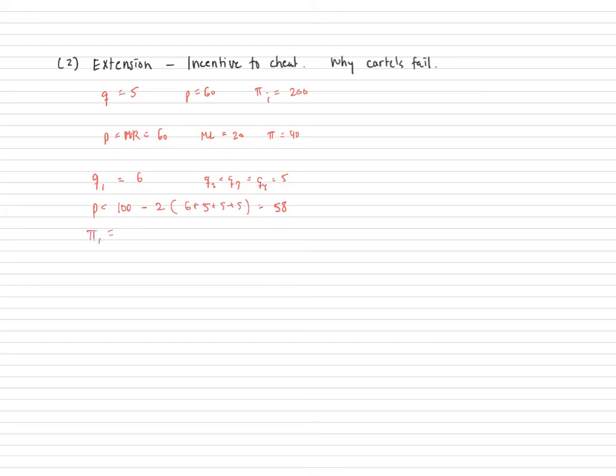And the firm one will then be making 58 minus 20 times six, because they're producing six units now, which is actually equal to 228. All right, so clearly 228 is greater than 200. And that is the incentive that each firm has to cheat.